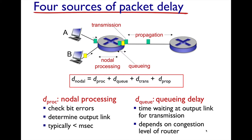If a packet arrives at the router and there's currently a packet being processed, the arriving packet is placed in a queue where it will wait until it's at the head of the queue and it's that packet's turn to be transmitted. The queuing delay refers to the amount of time a packet waits in a queue, and that queuing delay is considered to be infinite if your packet gets dropped — infinite because it never makes its way out of the router.